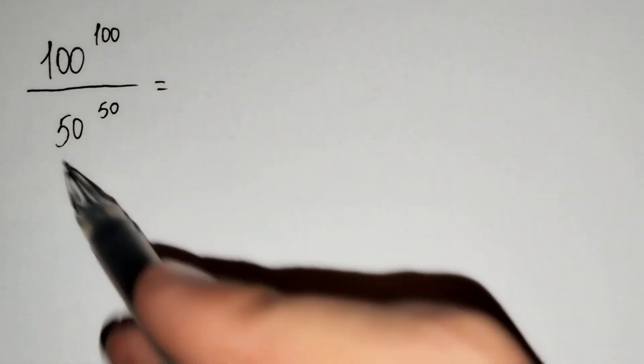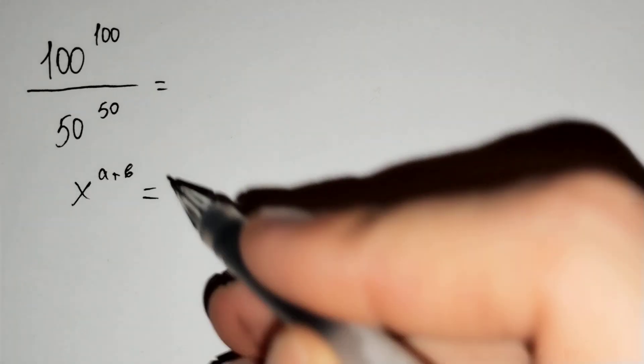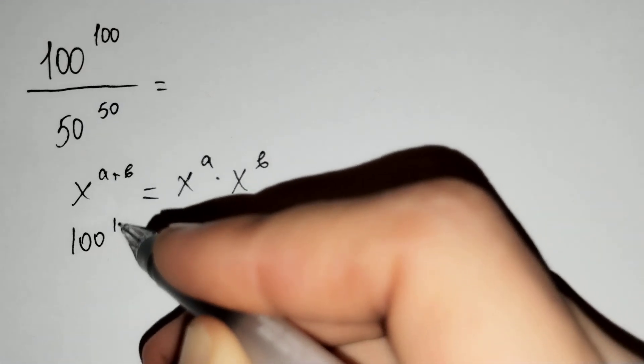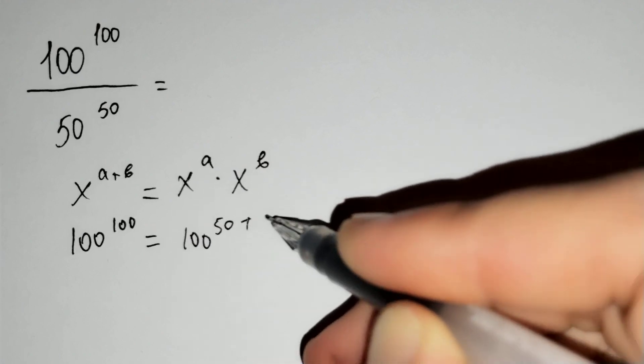Firstly, you should know that x power a plus b equals to x power a times x power b. And 100 power 100 equals to 100 power 50 plus 50.